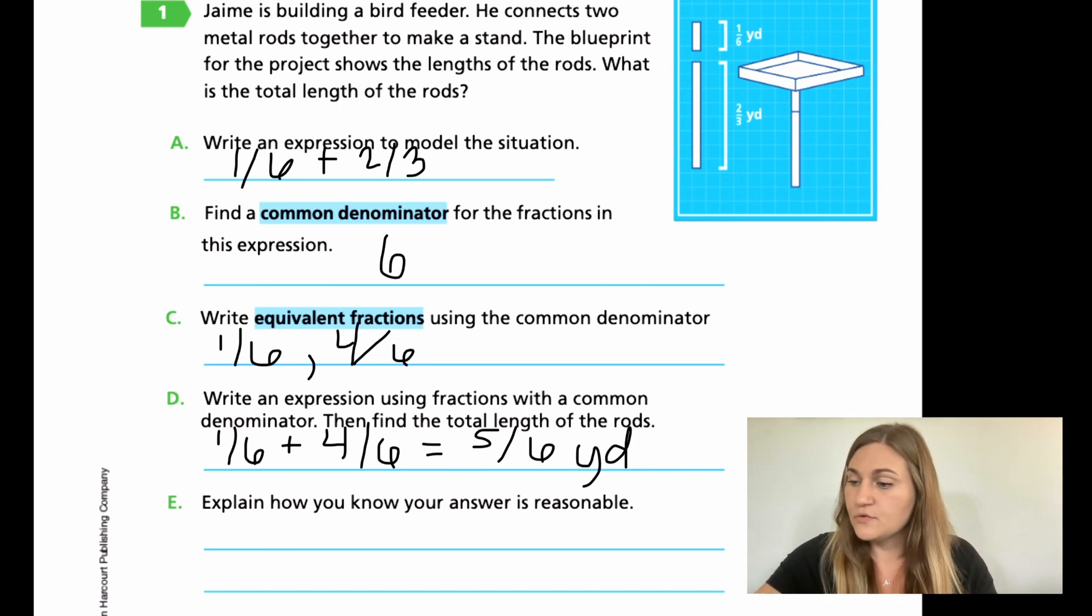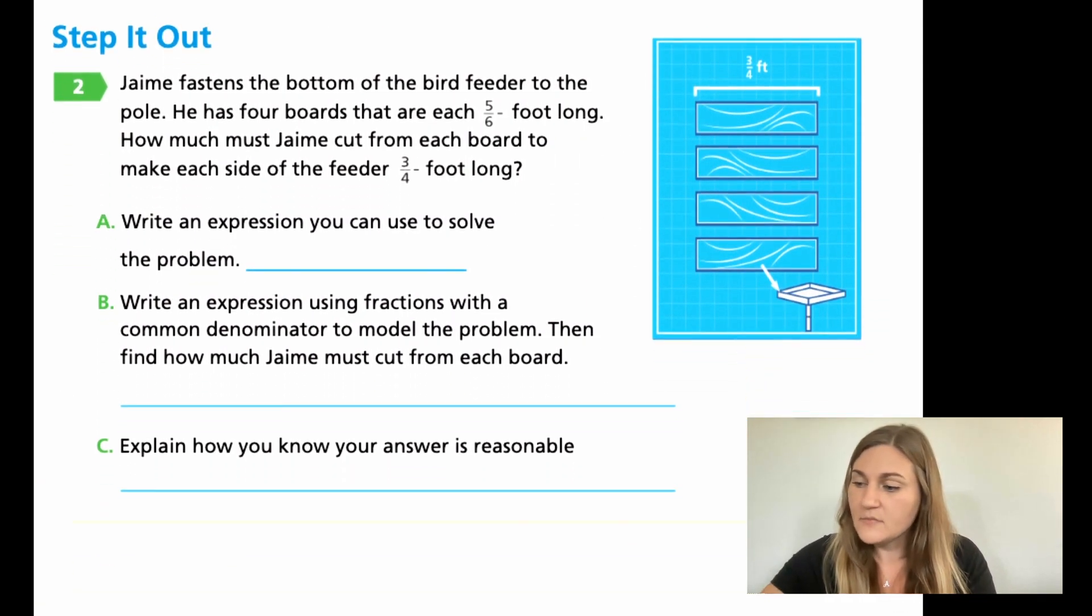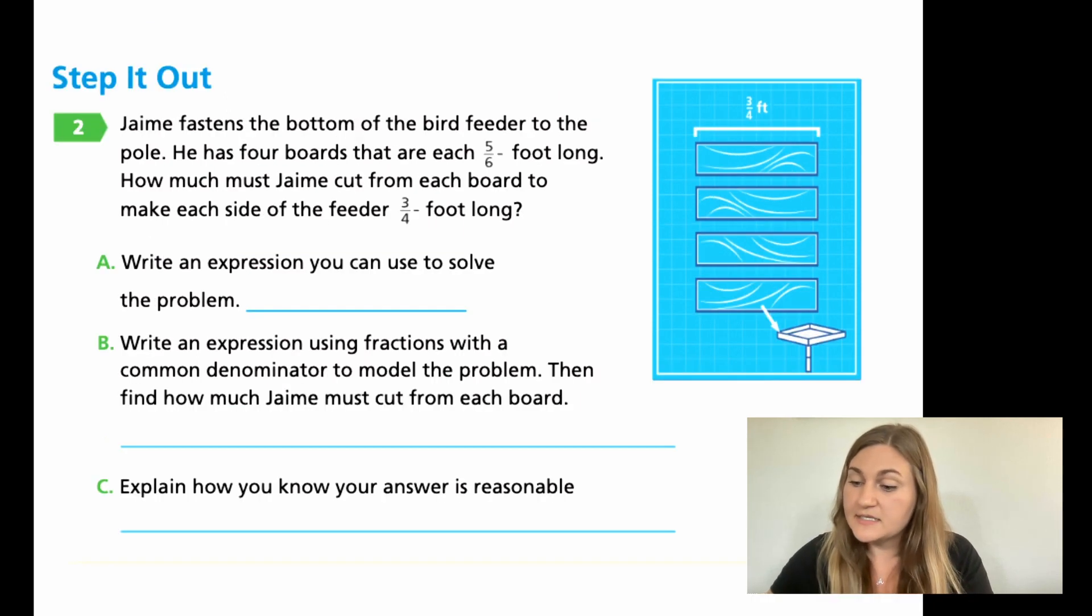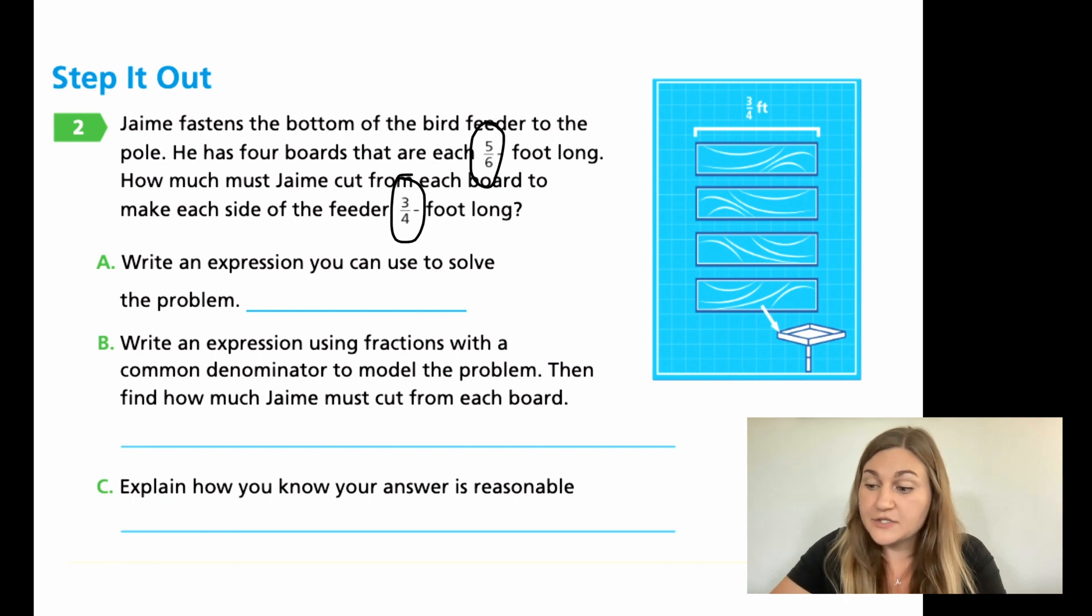All right. Using this knowledge, moving on to the next page on 154, we're just going to be doing the step it out problem number two. So I am going to zoom in a little bit to work on this. So it gives me a word problem that says, number two, Jamie fastens the bottom of the bird feeder to the pole. He has four boards that are each five-sixths foot long. How much must Jamie cut from each board to make each side of the feeder three-fourths of a foot long? Okay, so he has these four boards over in that blue square there. They are five-sixths, but he wants them to be three-fourths. So how much must he cut off? We know that if you cut off, you're taking off. That means subtraction.